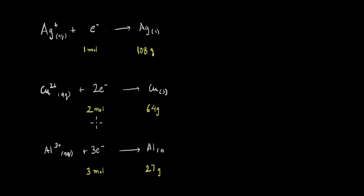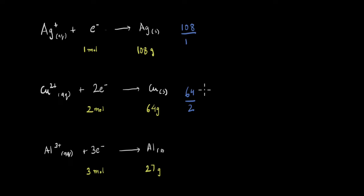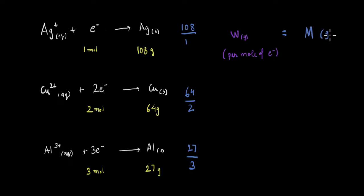In all of these cases, if we want to find how much deposition happens per mole of electrons, we divide the weight deposited by the number of moles of electrons. For silver: 108/1; for copper: 64/2; for aluminum: 27/3. We can generalize this: the weight deposited in grams per mole of electrons equals the molar mass M (in g/mol) divided by n, where n is the number of moles of electrons involved in the reaction.